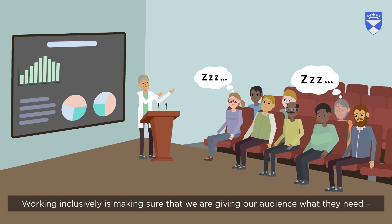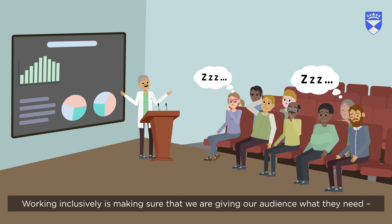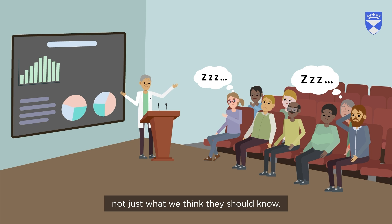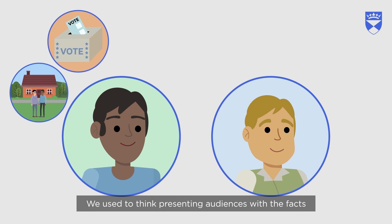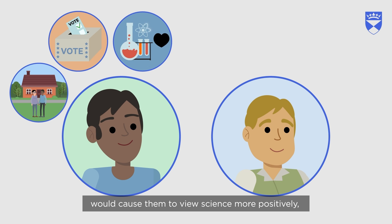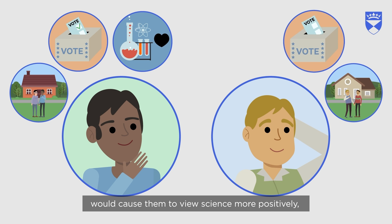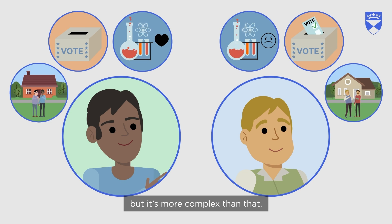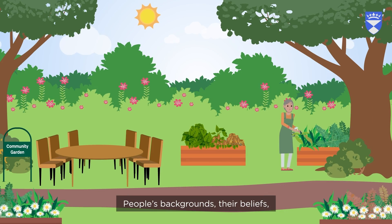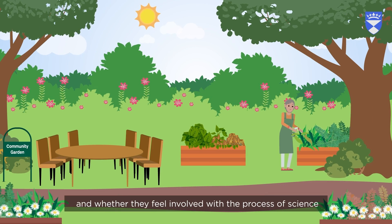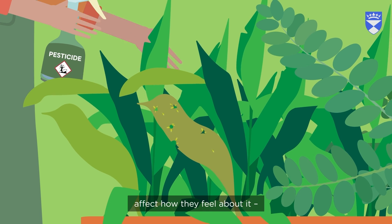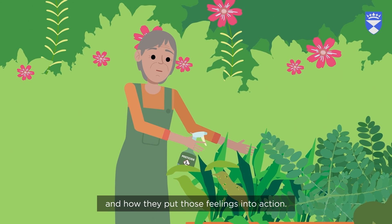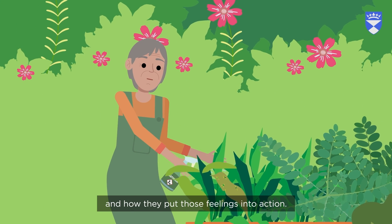Working inclusively is making sure that we are giving our audience what they need, not just what we think they should know. We used to think presenting audiences with the facts would cause them to view science more positively, but it's more complex than that. People's backgrounds, their beliefs, and whether they feel involved with the process of science affect how they feel about it and how they put those feelings into action.